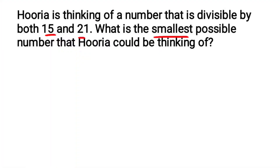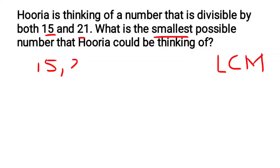The smallest number means we need to find the LCM — the Least Common Multiple. So we have to find the LCM of 15 and 21. We start with the 2 times table.